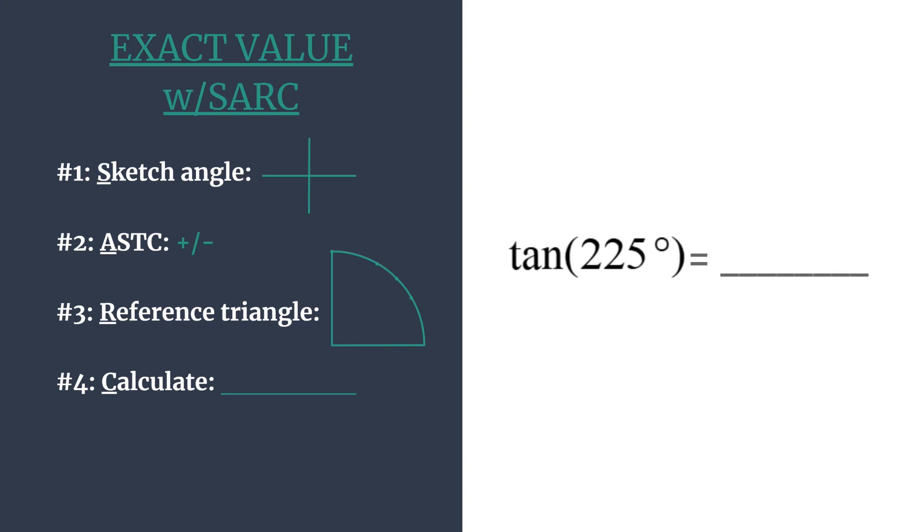So we're trying to find the tangent of 225 degrees. So we'll first sketch our angle. We see it's a positive angle, we know we're moving in the counterclockwise direction for our rotation so we can count 0, 90,